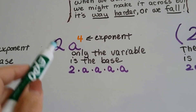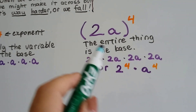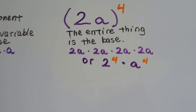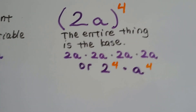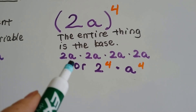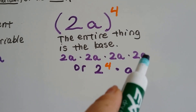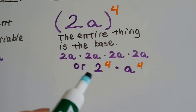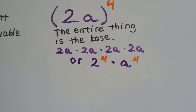So the 2 is not the base, but if we put them in parentheses, then the 2 is the base. That entire thing — the 2a — is the base. It means 2a times 2a times 2a times 2a, or we could say it's 2 to the 4th power times a to the 4th power.